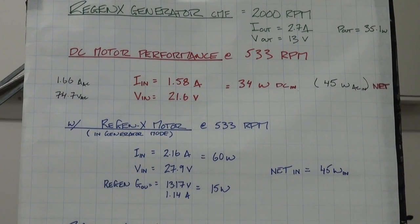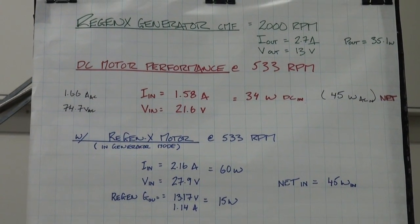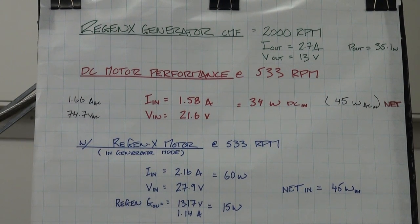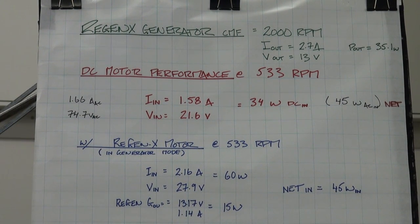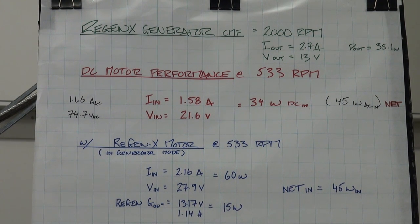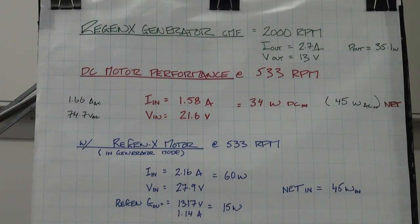to our pending integration into an EV, the RegenX generator critical minimum frequency (CMF) or operational speed is 2000 rpm.